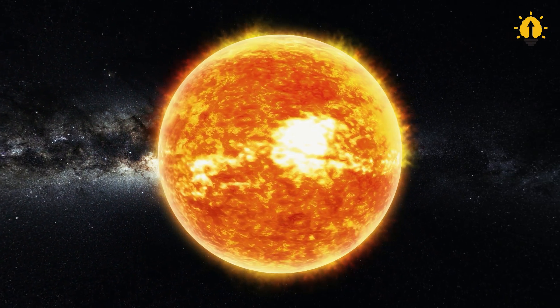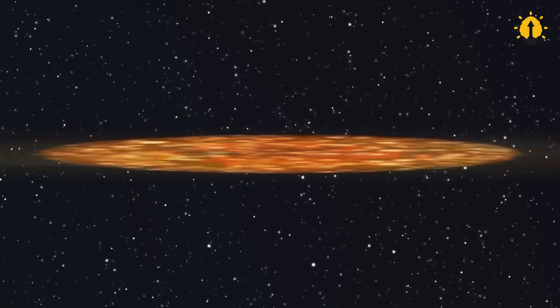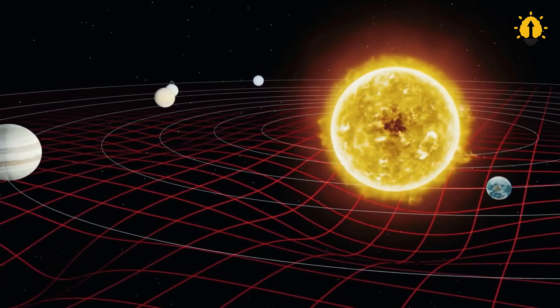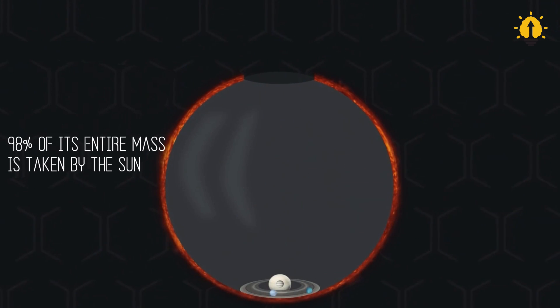Everyone knows that the Sun is big. But how big? Actually, to say it's big is an understatement. Our solar system has 8 planets, yet 98% of its entire mass is taken up by the Sun.